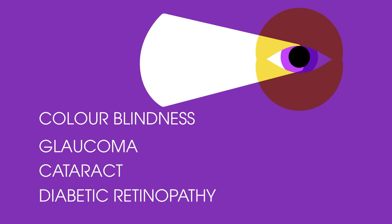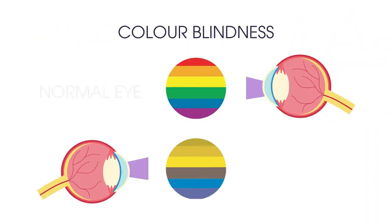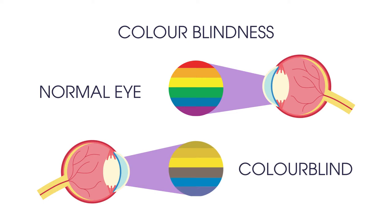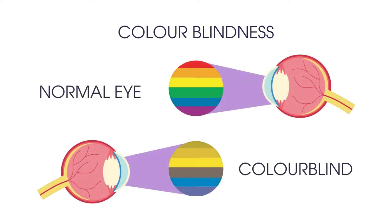So let's start with colour blindness. Perhaps you know someone who is colour blind, or maybe you are. A colour blind or colour vision deficient person cannot tell some colours apart, or may only see the world in shades or tones. But why does this happen?